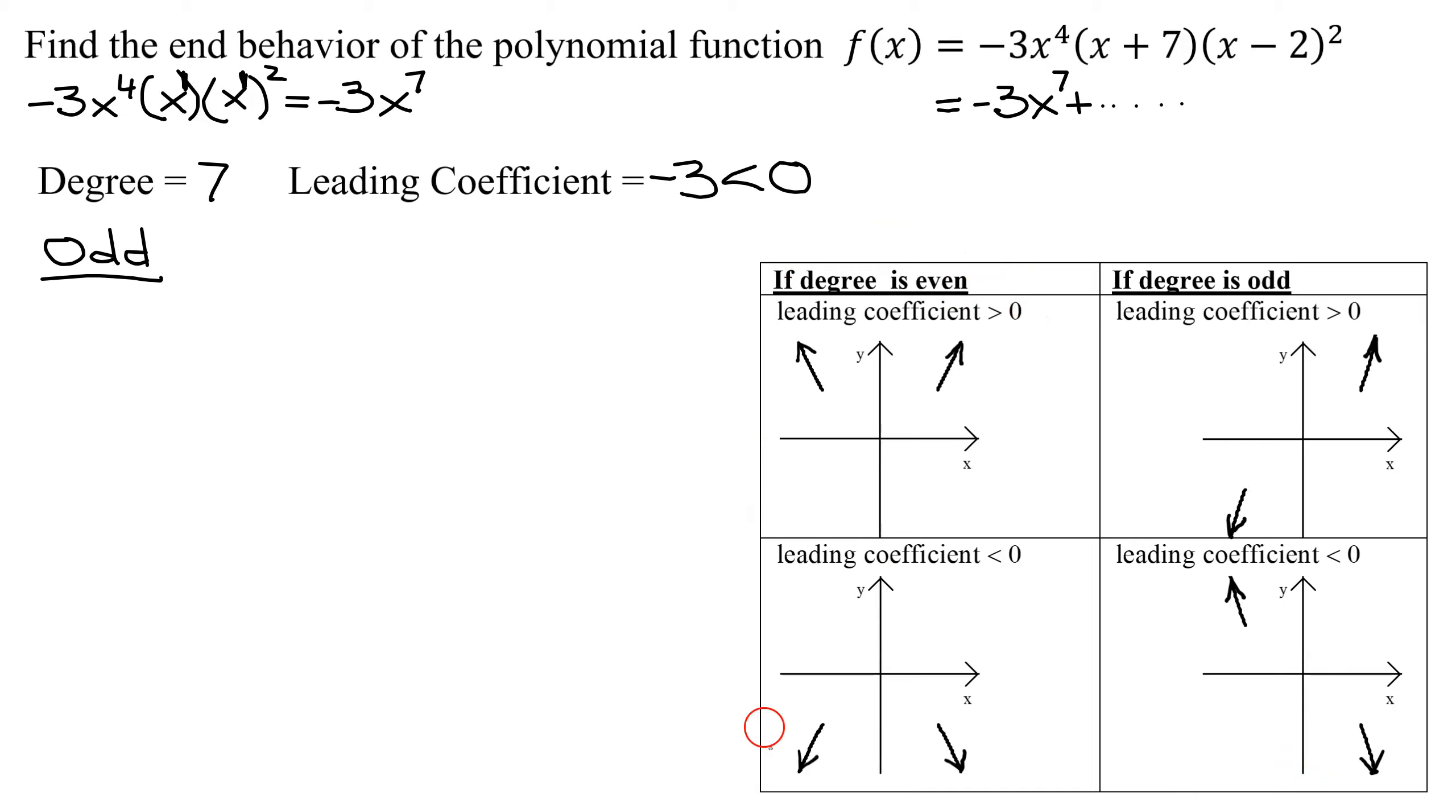This is what happens if the degree is even. But in our case, the degree was odd, so I need to look in this column. And our leading coefficient was negative, so it is this case here.